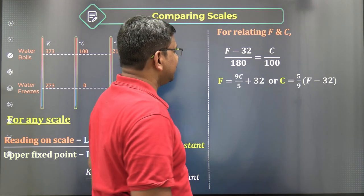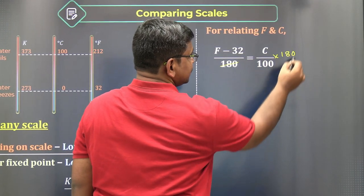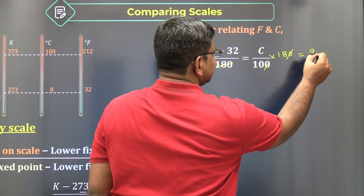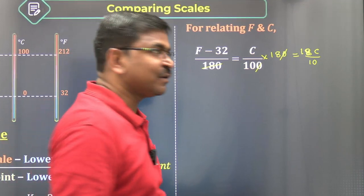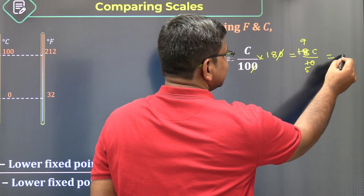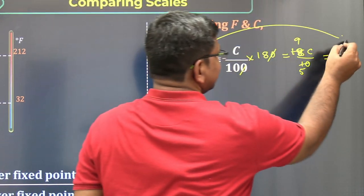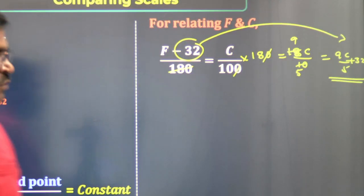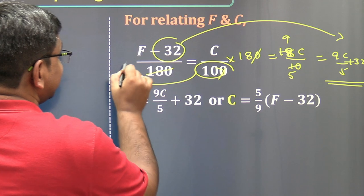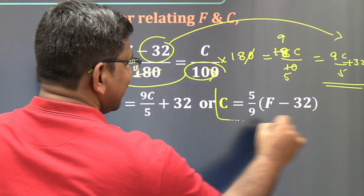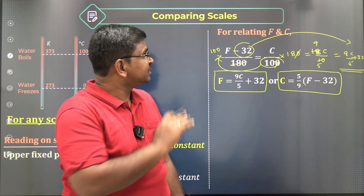Multiplying both sides by 180: I get 18C / 10, which simplifies using factor 2 to 9C / 5. Taking minus 32 to the other side gives plus 32. So F = (9C / 5) + 32. If I want to express C: C = (5 / 9)(F minus 32). These are the conversion formulas between Fahrenheit and Celsius — a simple algebraic simplification.